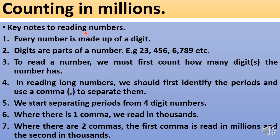Key notes for reading numbers in millions. When counting in millions, every number is made up of digits — digits are parts of a number. For example, 33 is made up of 2 digits; 456 is made up of 3 digits; 6,789 is made up of 4 digits. To read a number, first count how many digits it has. When reading long numbers, identify the periods and use commas to separate them. We start separating periods from 4-digit numbers onward; for 1 to 3 digits, no comma is needed.